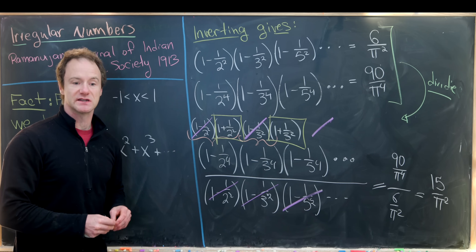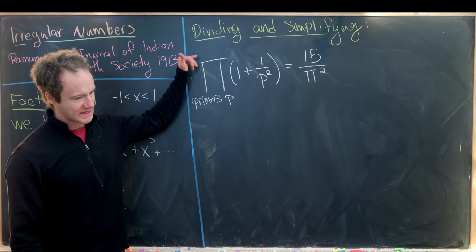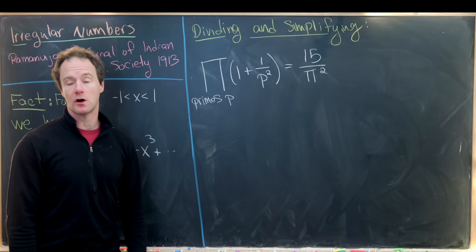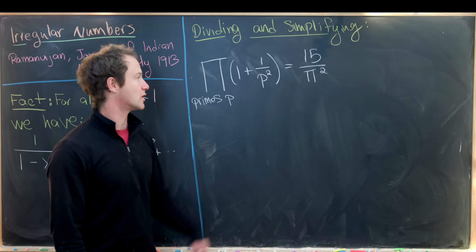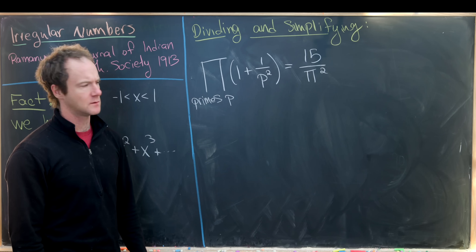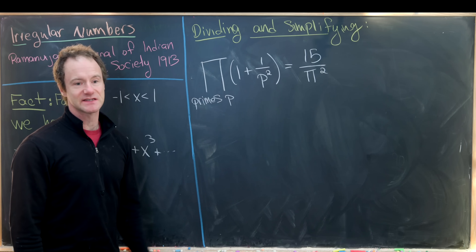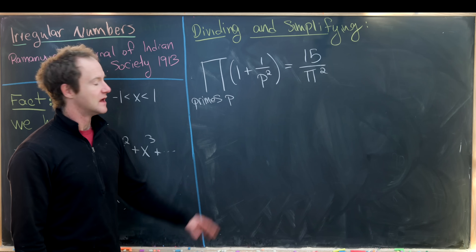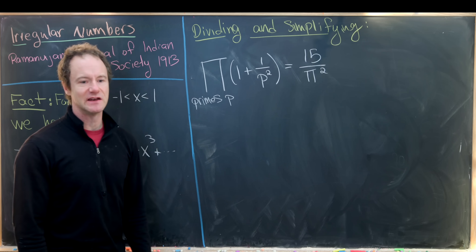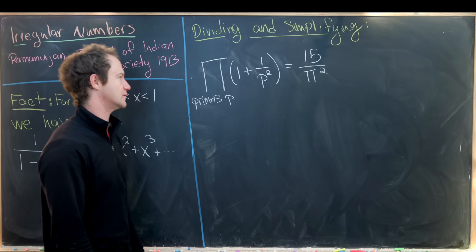After dividing and simplifying, we end up with the following identity: the product over all primes p of 1 plus 1 over p squared equals 15 over pi squared. This in itself is pretty interesting, but I'd like to expand the left-hand side and write it as an infinite sum to see if that sum has some nice structure — and as we'll see, it definitely will.